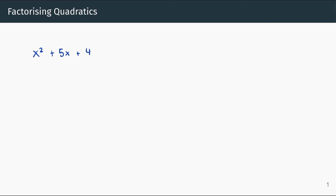Our goal in factorizing quadratics is writing this expression in two different brackets. These two brackets will contain x plus or minus a number, and x plus or minus a number, and we have to find these numbers to make both sides equal.